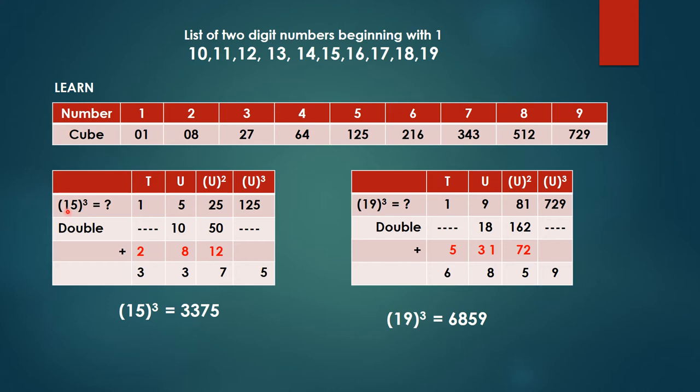Now 1 is in tens place, 5 is in units place right. So I've given the columns over here: T is tens, U is unit, U square means unit number in the units place squared, then U cube means number in the units place cubed.